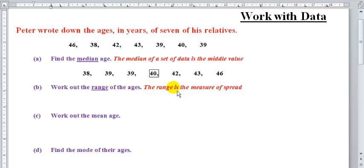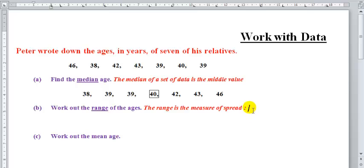Range is the measure of spread. You can also say range equals highest minus the lowest value. In this case, the lowest value is 38 and the highest value is 46. So all you just need to do is say 46 minus 38, and that will give you 8.